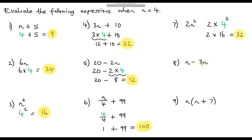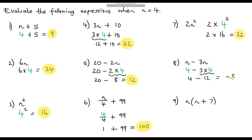Question 8 is n minus 3n. Here we've got two instances of n to substitute. So it's going to be 4 minus 3 times 4. We do the multiplication first: 3 times 4 is 12. So it's 4 subtract 12, and 4 subtract 12 is negative 8.